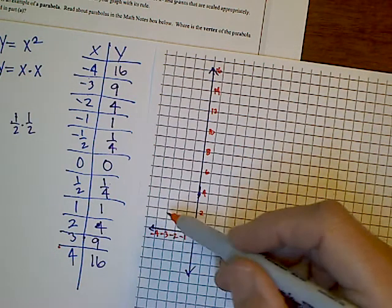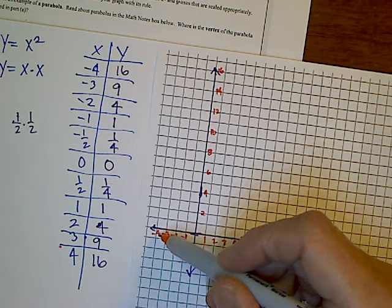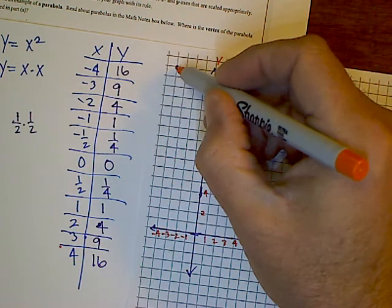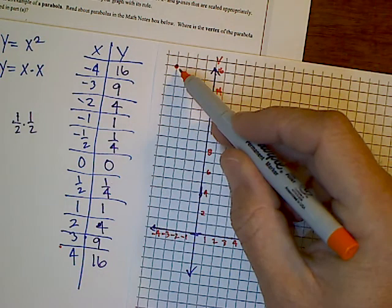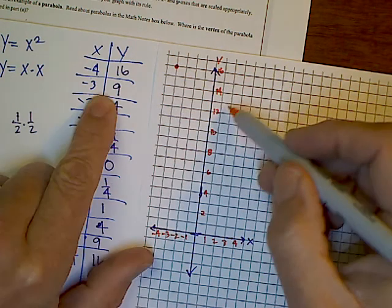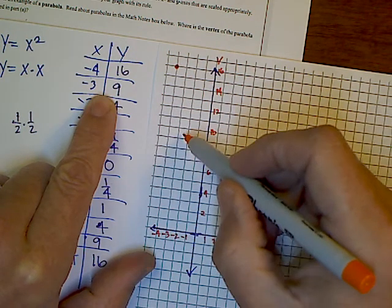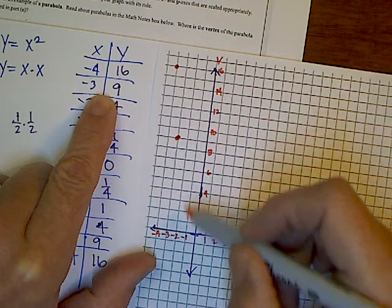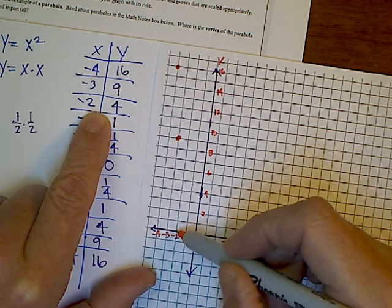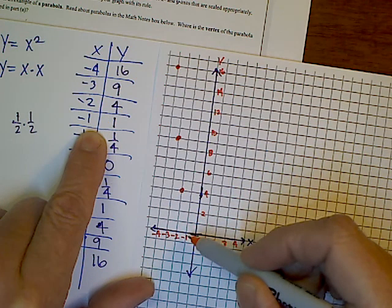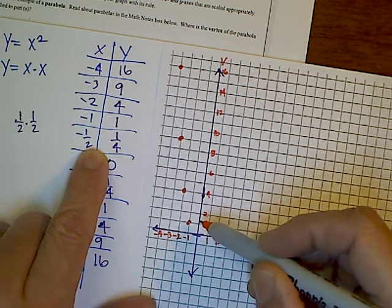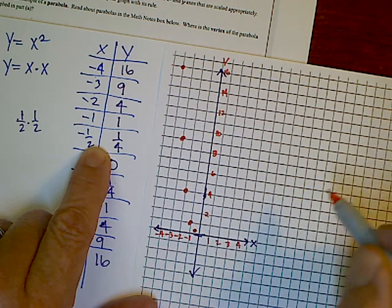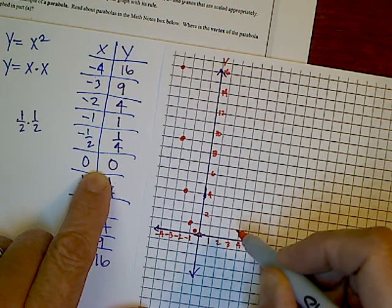I'm going from negative 4 on the x axis all the way up to 16, so there's my first point: negative 4, positive 16. Then I have negative 3 on the x, positive 9 on the y, right here. I have negative 2 and positive 4, which looks like right here. Then I have negative 1, positive 1. I have negative 1 half, positive 1 fourth, barely above there. Then I have 0, 0, which is my origin.